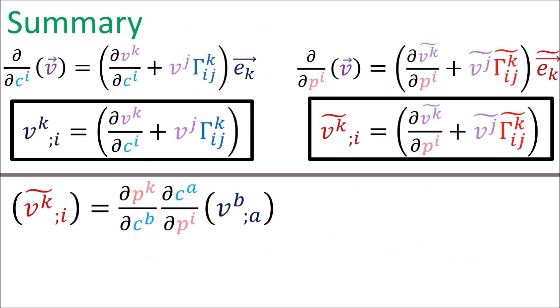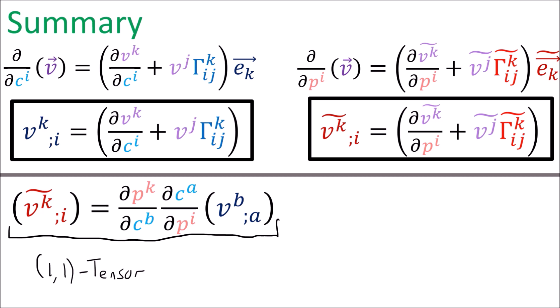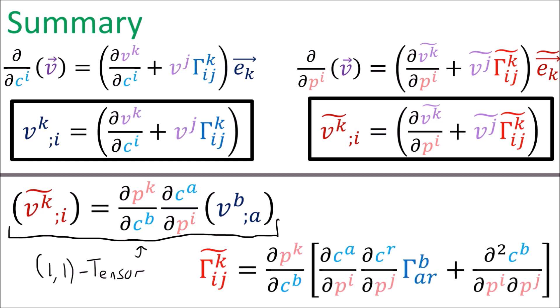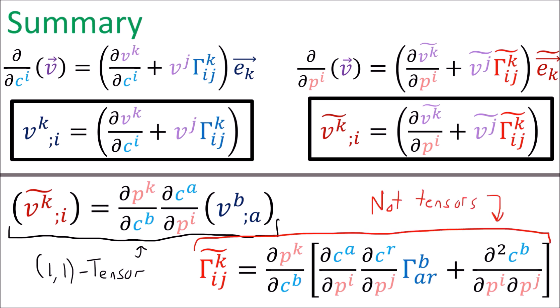In conclusion, we've shown that the covariant derivative components form a tensor and transform with a contravariant rule and a covariant rule, whereas the Christoffel symbols are not tensors because they follow a different transformation rule.